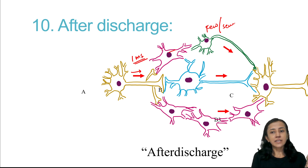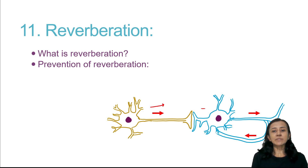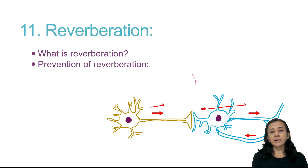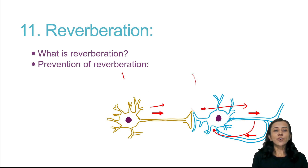Related to after discharge is reverberation. The impulse passes from the presynaptic terminal to the postsynaptic terminal and then comes back to the presynaptic one — pre-synaptic to post-synaptic and back to pre-synaptic again in a loop. Reverberation stops when fatigue develops.